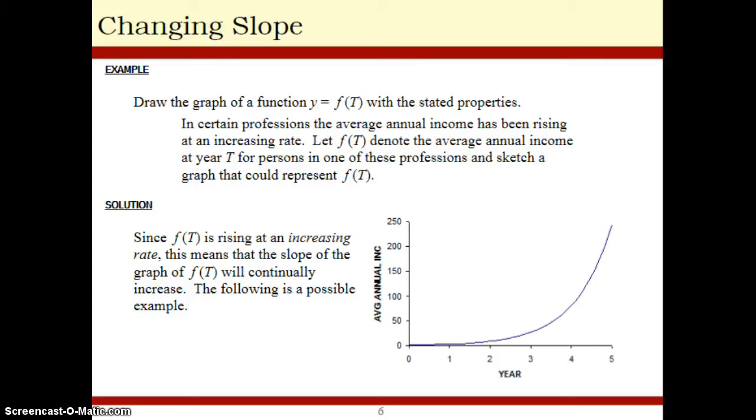For example, if we have a function right here that it's asking us to draw a graph of a function where the average annual income has been rising at an increasing rate. Do you see that this graph—remember, the rate is the slope of the tangent line—and do you see how as x increases, the slope of the tangent line is also increasing?